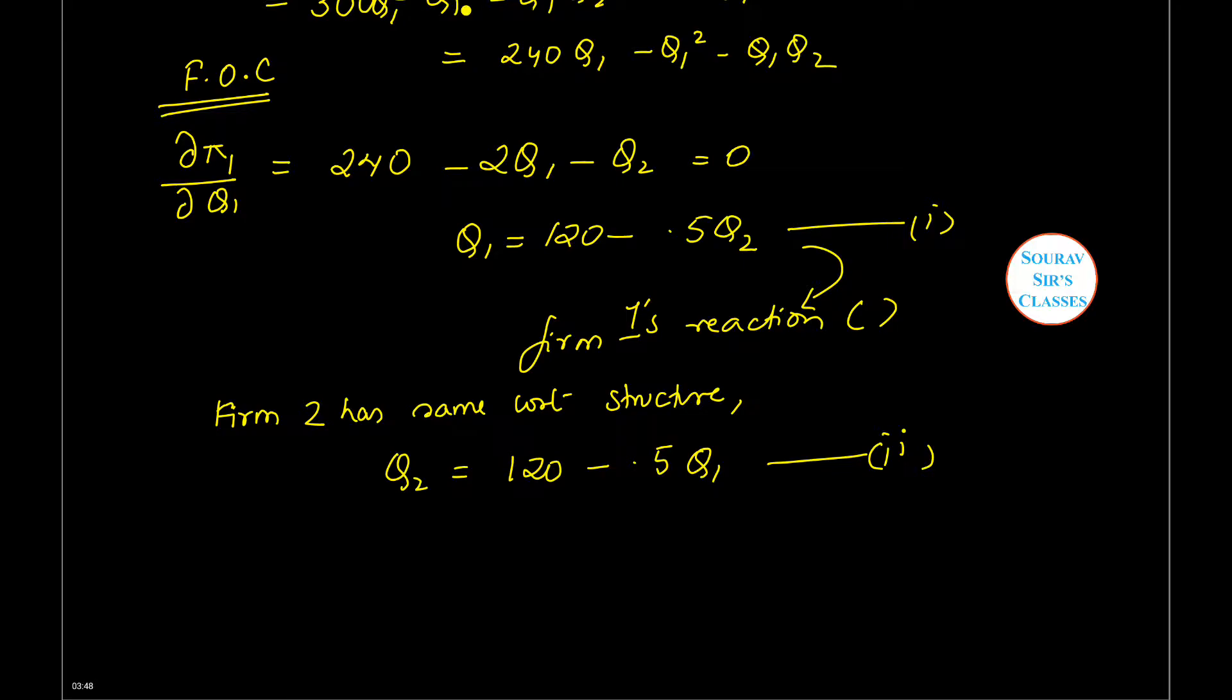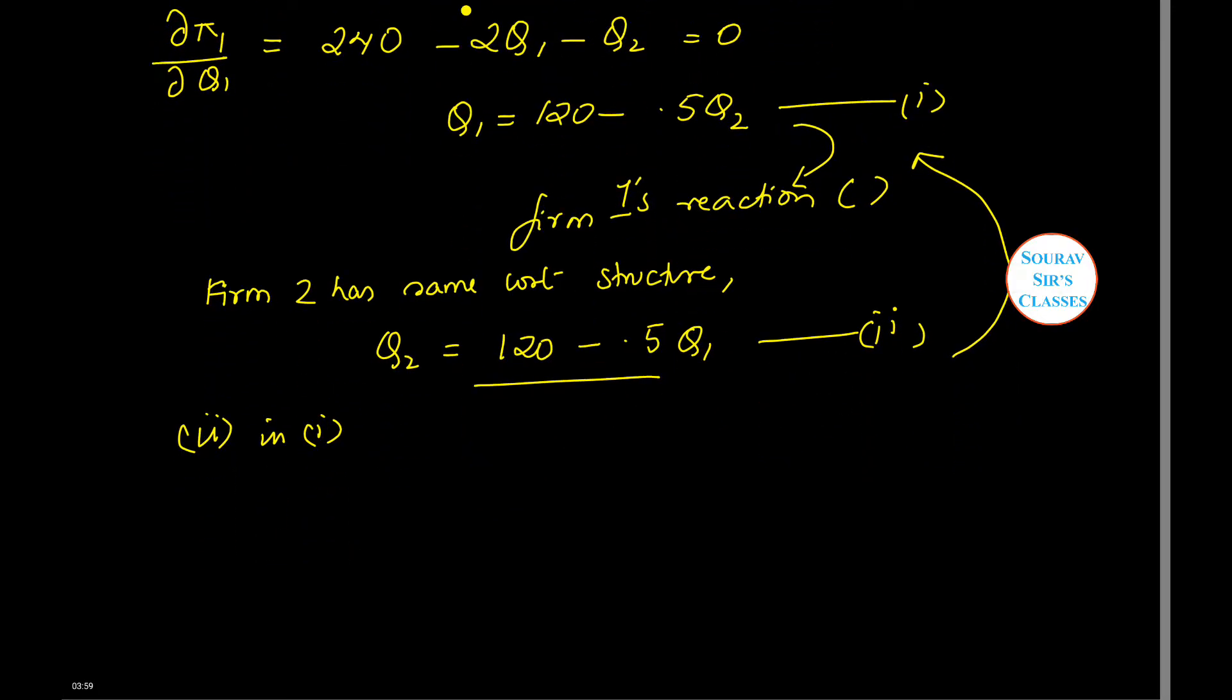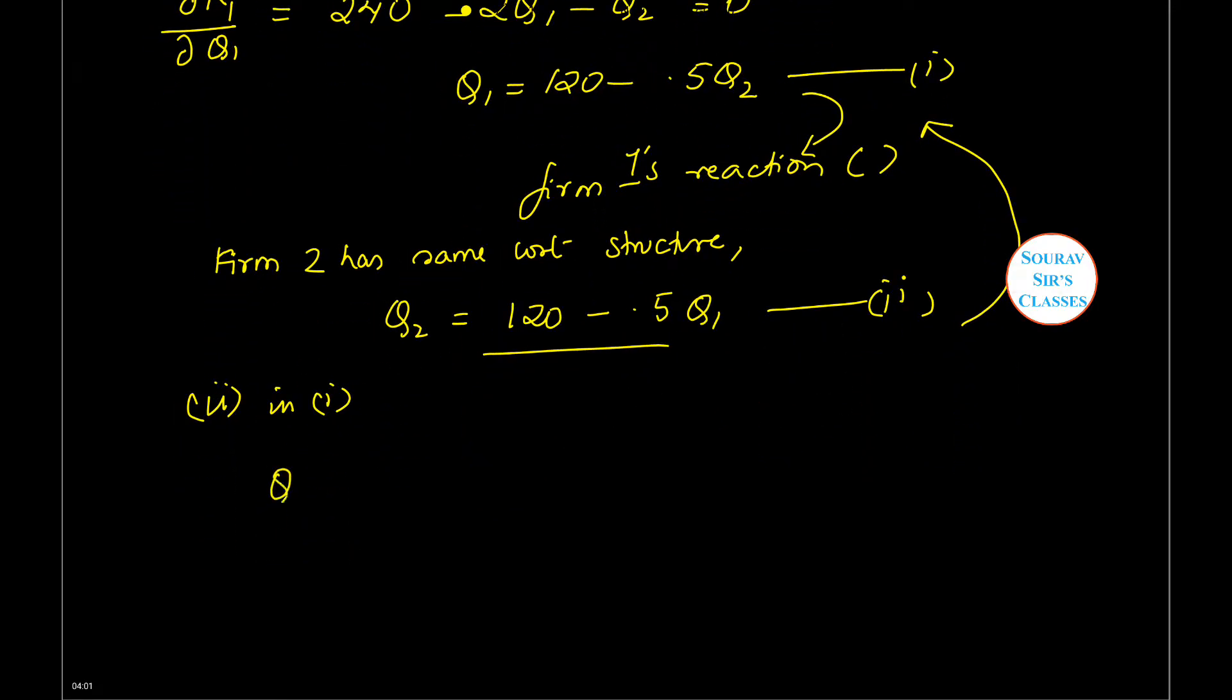Now after getting these, we will substitute the value of Q2 into equation one. Substituting two into one, we get Q1 = 120 - 0.5(120 - 0.5Q1). After simplification, Q1 will be equal to 80.